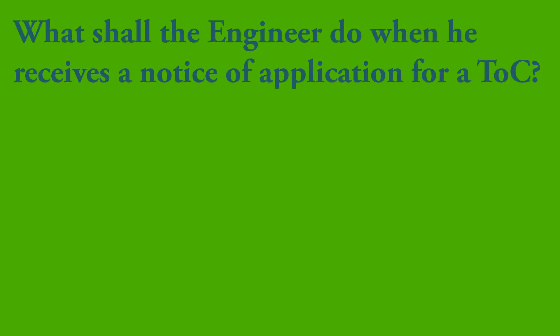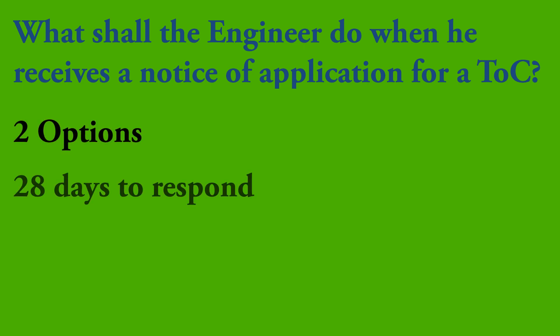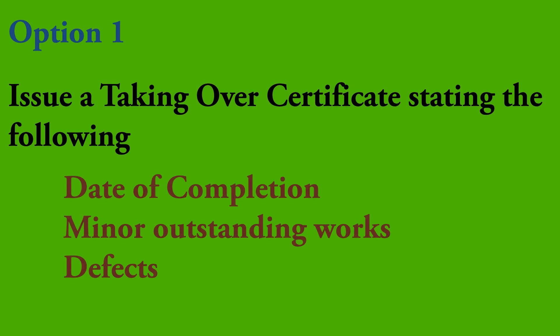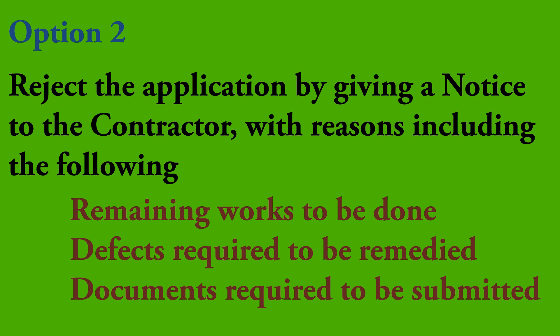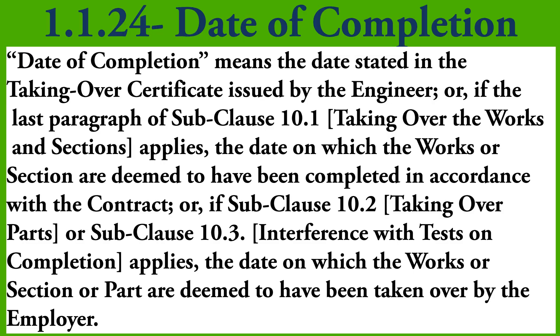Now we'll look at what the engineer shall do when receiving the contractor's notice of application for a TOC. He has two options to perform within 28 days. First, he may issue the TOC to the contractor stating the date on which the works were completed and listing minor outstanding works and defects that will not substantially affect safe use. If it is not possible, he shall reject the application by giving a notice to the contractor with reasons, specifying work required, defects to be remedied, and documents required to enable the TOC to be issued.